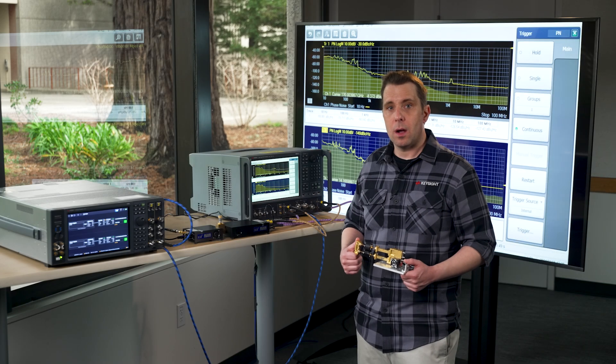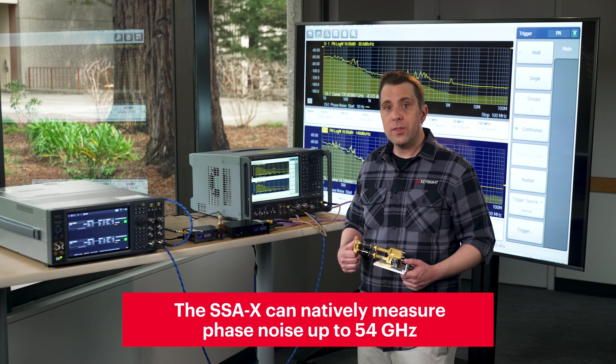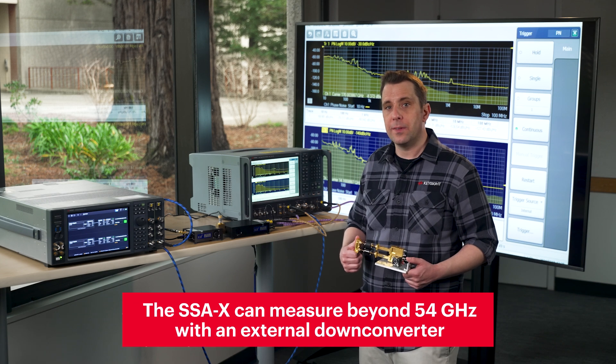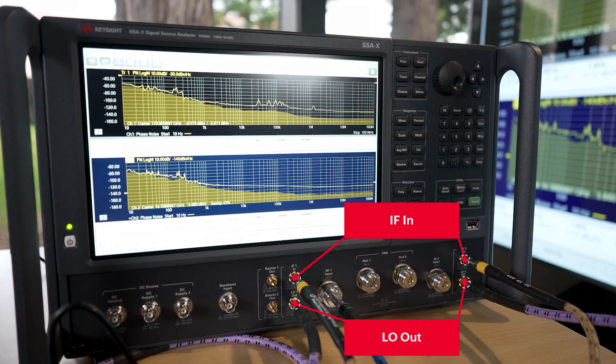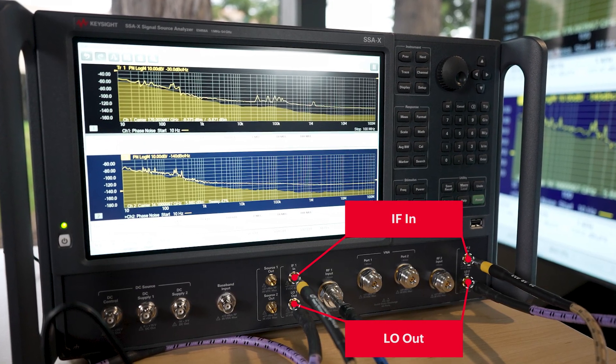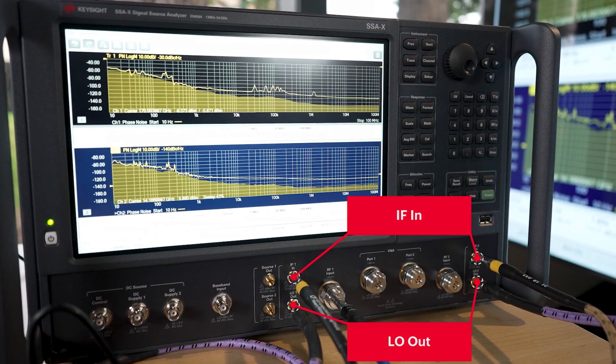As we just saw, the SSA-X can natively measure phase noise up to 54 gigahertz. It can also measure absolute phase noise beyond 54 gigahertz with an external down converter. The SSA-X has two independent LO outputs and IF inputs to enable both internal channels to be used with a dual channel down converter for cross correlation and thus higher sensitivity.